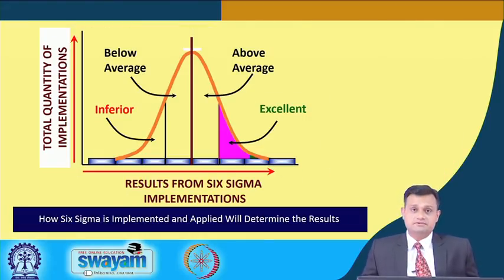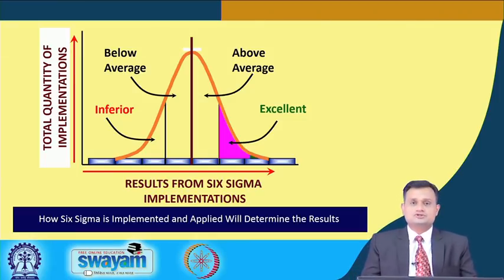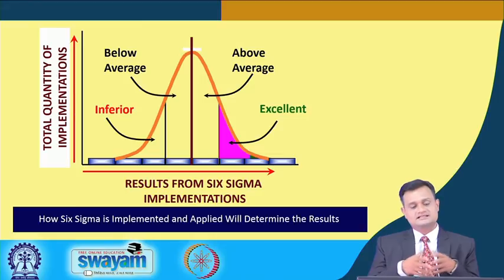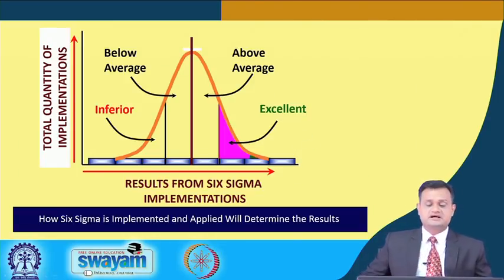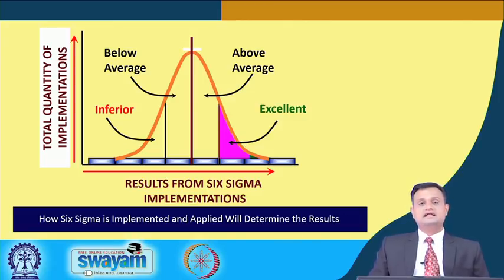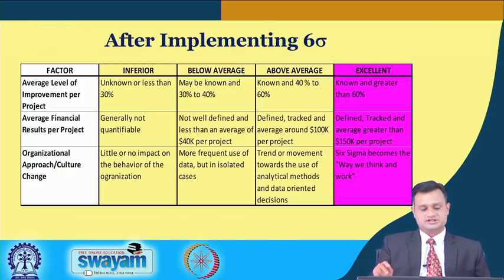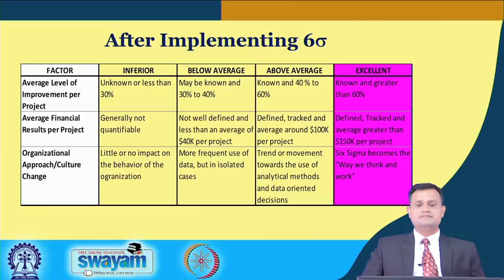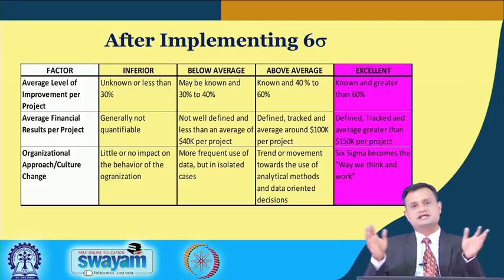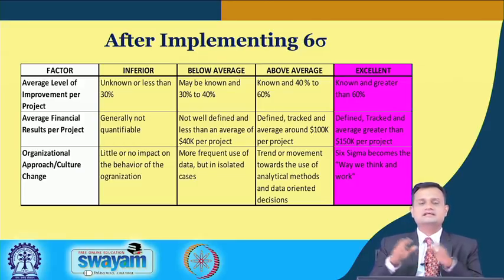When implementing Six Sigma, if you visualize it in the form of a normal distribution, the excellent region is depicted in pink. If your Six Sigma implementation results — whether in monetary terms or defect rate reduction — fall in this region, your implementation is successful and the benefits can be sustained. The average level of improvement per project: if it is unknown or less than 30 percent, it is rated inferior; 30–40 percent is below average; 40–60 percent is above average; and greater than 60 percent is excellent.